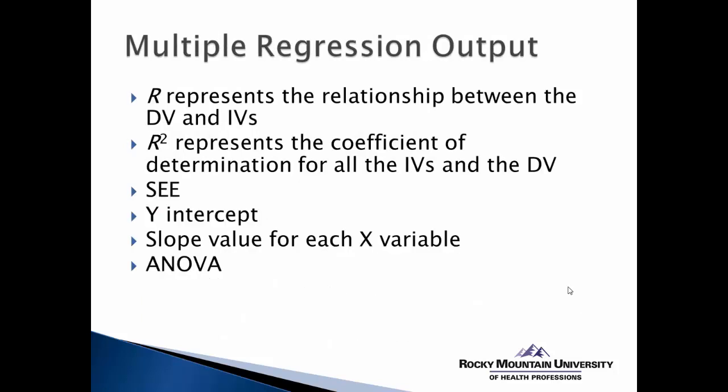When we get a multiple regression output — which we'll see in a demonstration video in Excel — we get several useful pieces of information. The first is the R value, representing the relationship between the predictors and the outcome. The R-squared, or coefficient of determination, tells us how much all the independent variables explain the variance in the dependent variable. The higher the R-squared, the better the prediction. If we can get to around 50% or greater, that indicates we're able to explain a lot of the variance and make a good prediction.